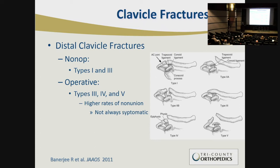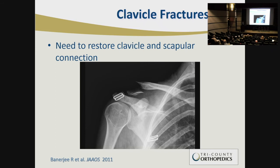For distal clavicle fractures, Neer types 1 and 3 — where the coracoclavicular ligaments are intact — can be treated nonoperatively, as they are stable injuries and patients should do very well even with malunion. In types 2, 4, and 5, where there is true disruption of the clavicle-to-scapula attachment, fixation is needed, as otherwise the patient will generally go on to a painful nonunion. An example is when the coracoclavicular ligaments are attached to a distal fragment and the clavicle has sprung up — that's unlikely to heal and likely to lead to dysfunction.